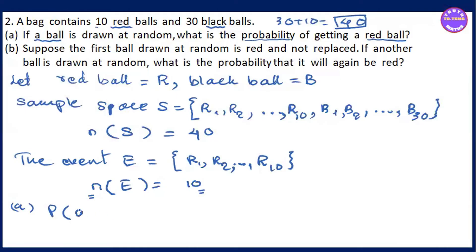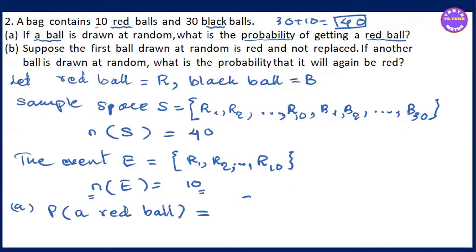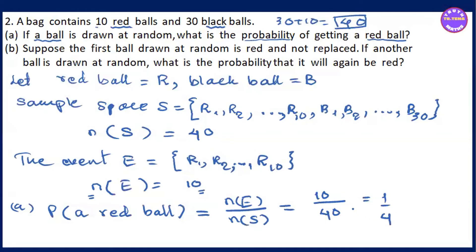P, probability of a red ball. If we have a red ball, the probability is N of E by N of S equal to 10 by 40, so 1 by 4. That's number A.